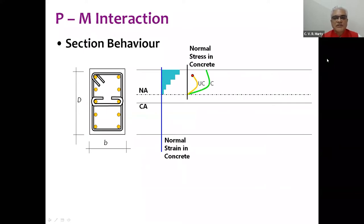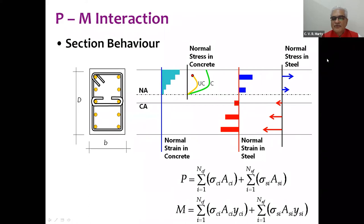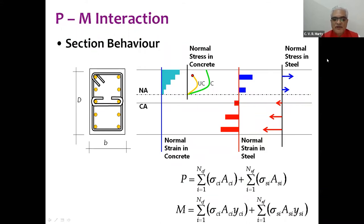Once we know the normal stress in steel and the areas of each discretized concrete and steel fiber, we sum the forces contributed by each fiber to get the axial force and bending moment at the cross section. It is critical to note that concrete fibers are not considered on the tension side, which is the standard design assumption.